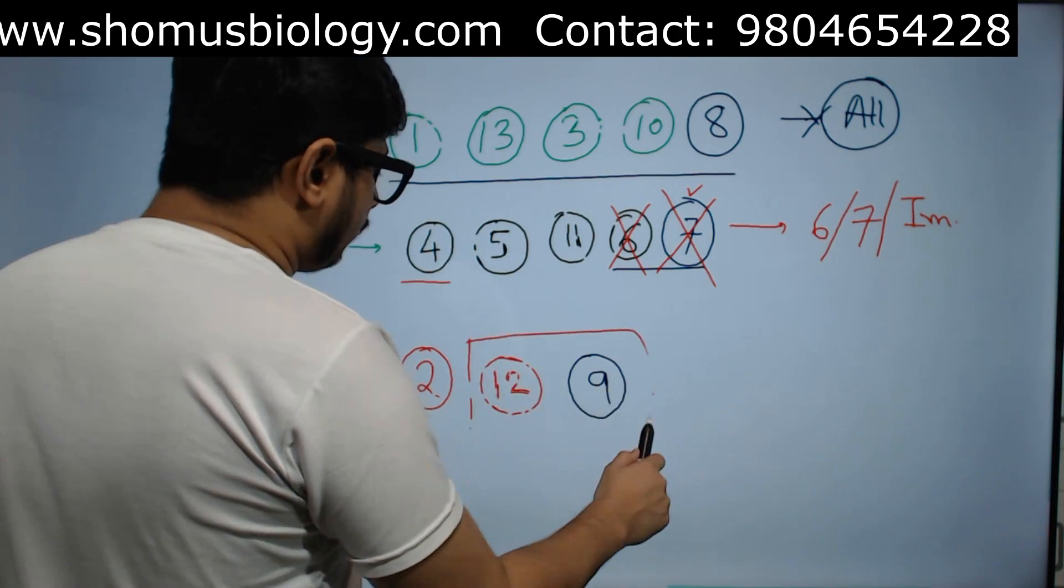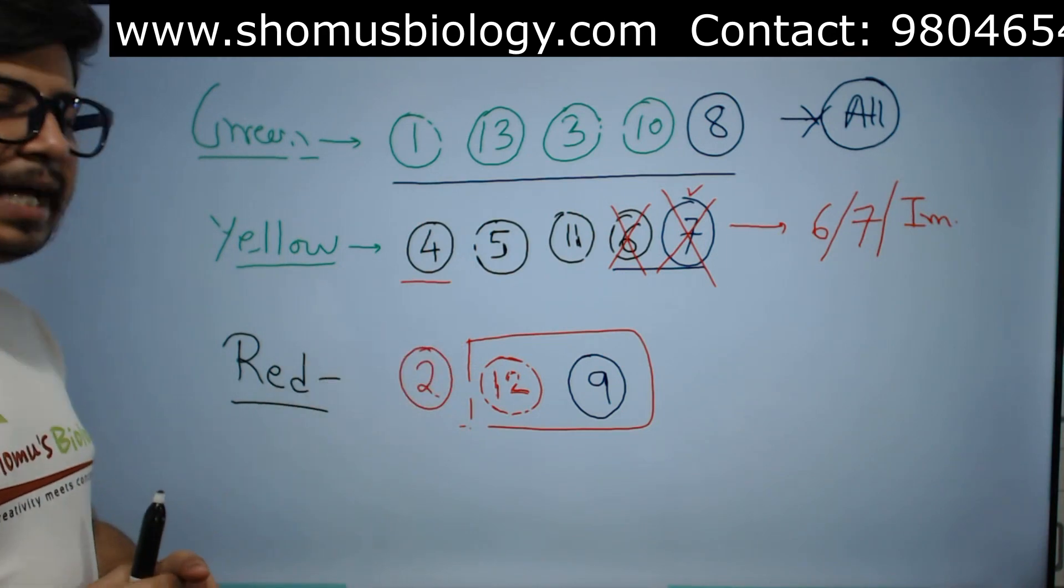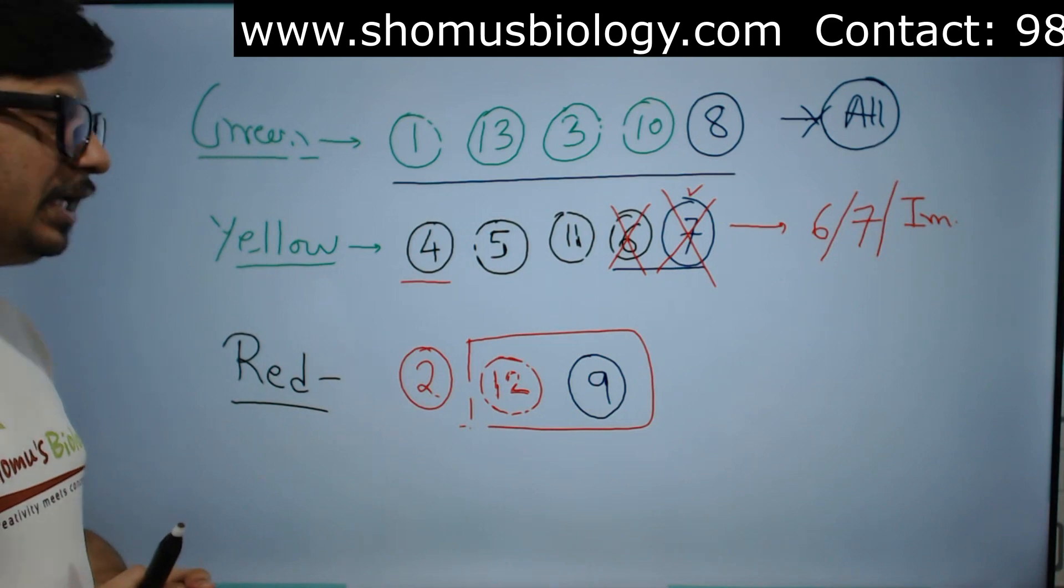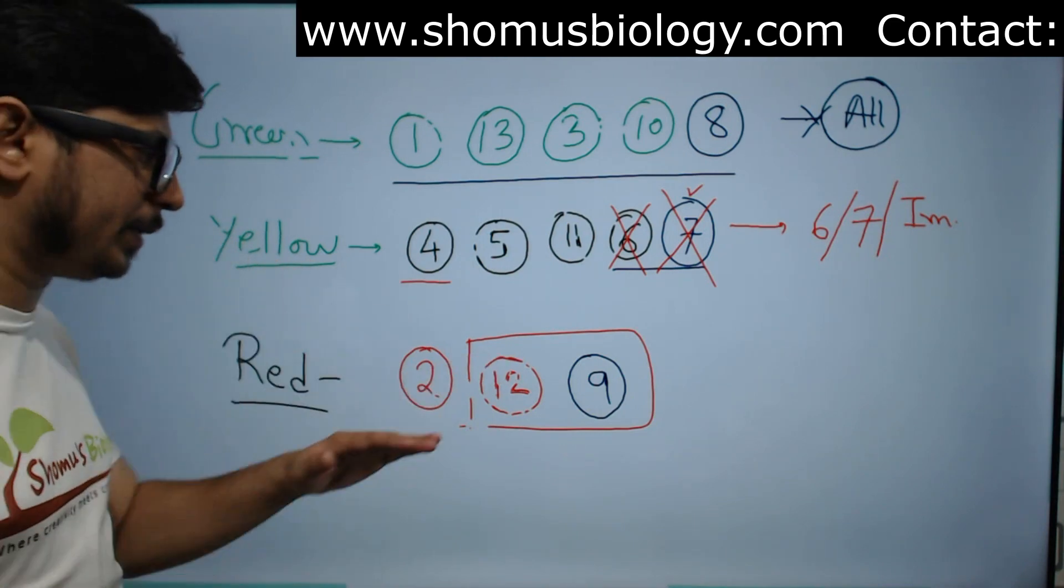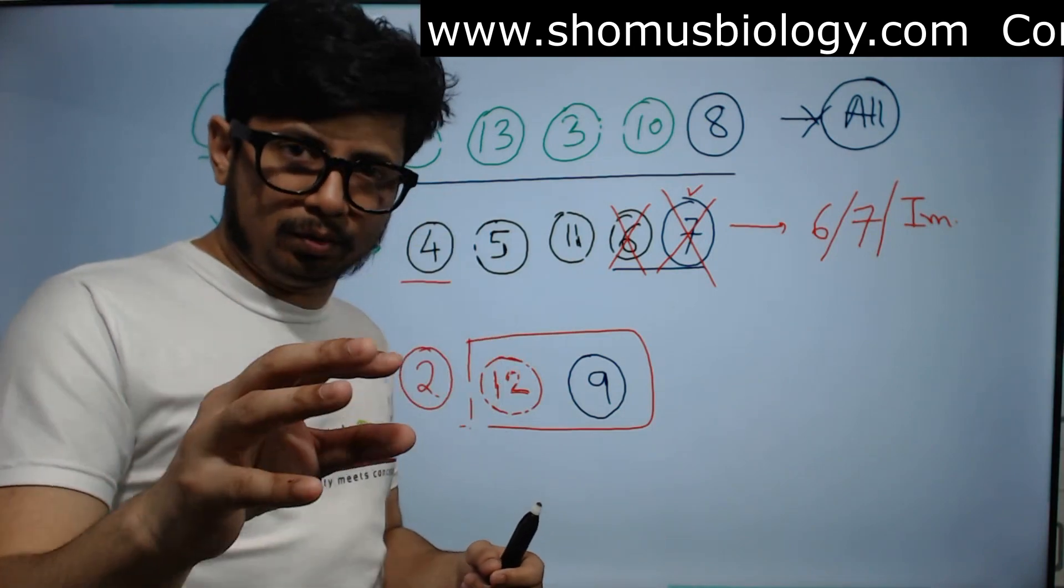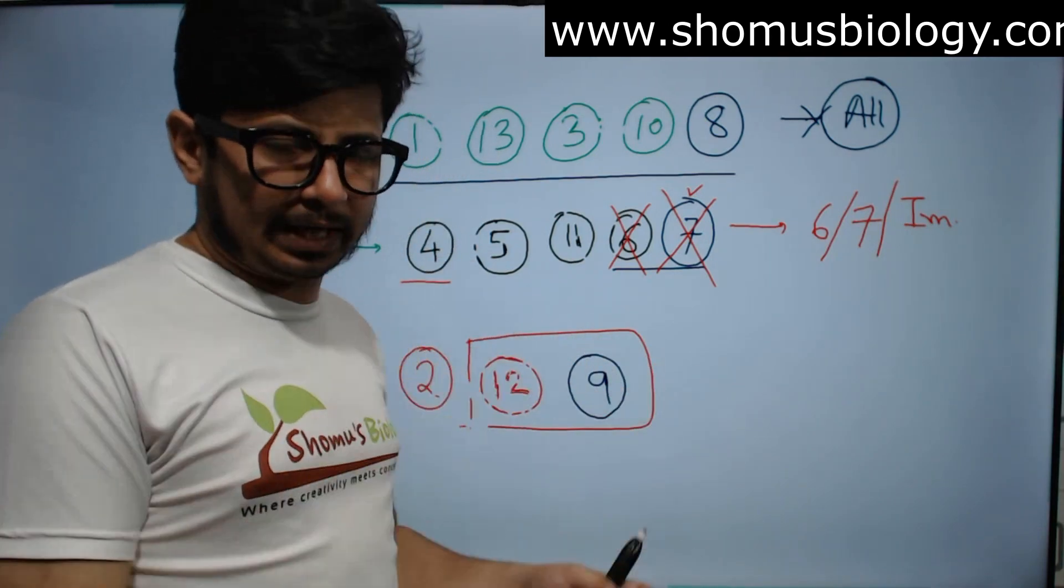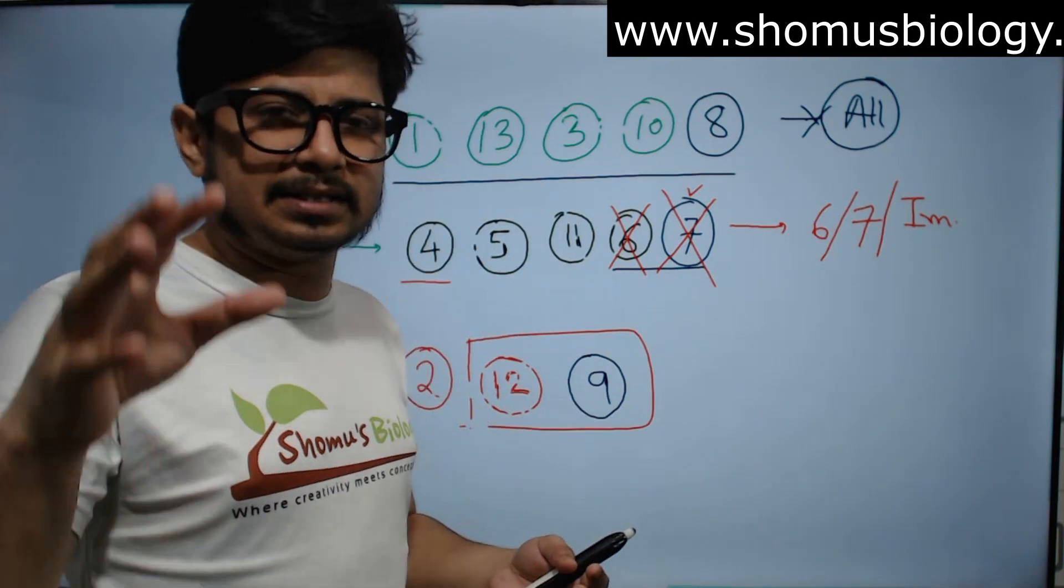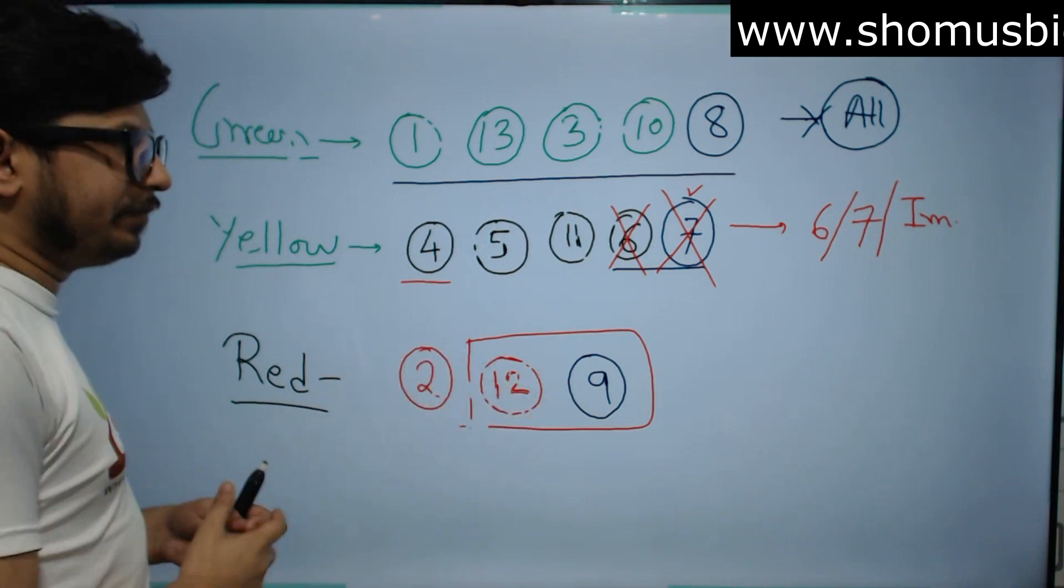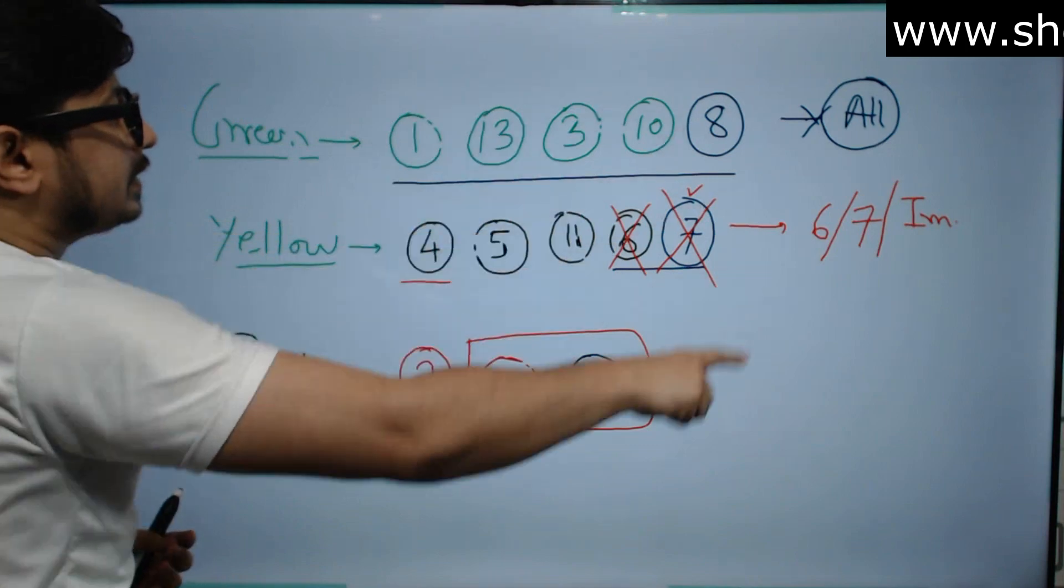Apart from that, we have Unit 12 and Unit 9. These two units you can leave without any second thought. Unit 9 is from classification biology, where I prefer you should read the cladogram analysis. Apart from that, rest you can leave. How to prepare cladogram analysis, there's a video in my channel you can watch that. You can leave Unit 12 because there is no proper structure of questions from it.